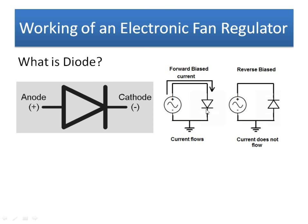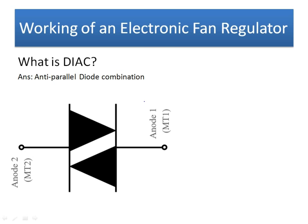When the diode behaves like a short circuit, this mode is called forward bias mode. When it is connected with reversed polarity, it is called reverse bias mode. Current flows for forward bias and current does not flow for reverse bias.